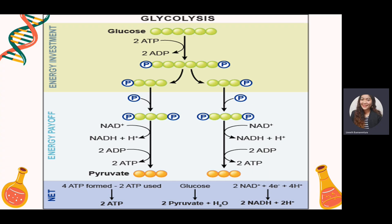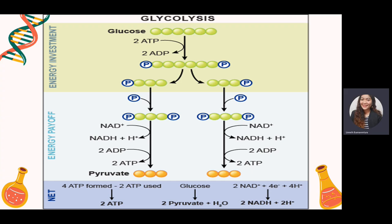The fate of glucose through glycolysis is to form two pyruvate molecules, and it also produces water. In glycolysis, 2 NADH are also used: with 4 electrons and 4 hydrogen ions, it produces 2 NADPH plus 2H.